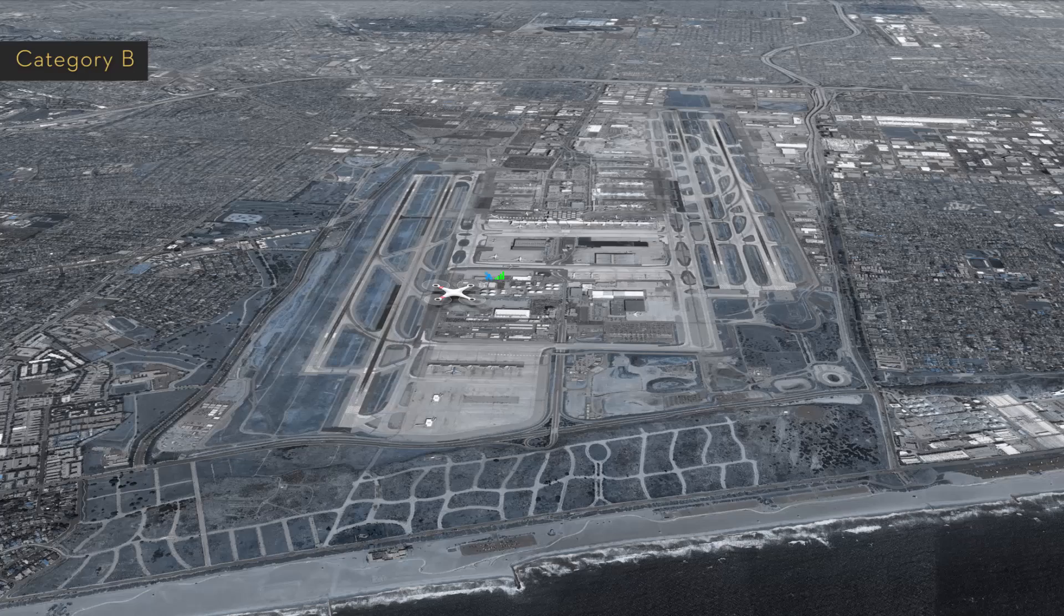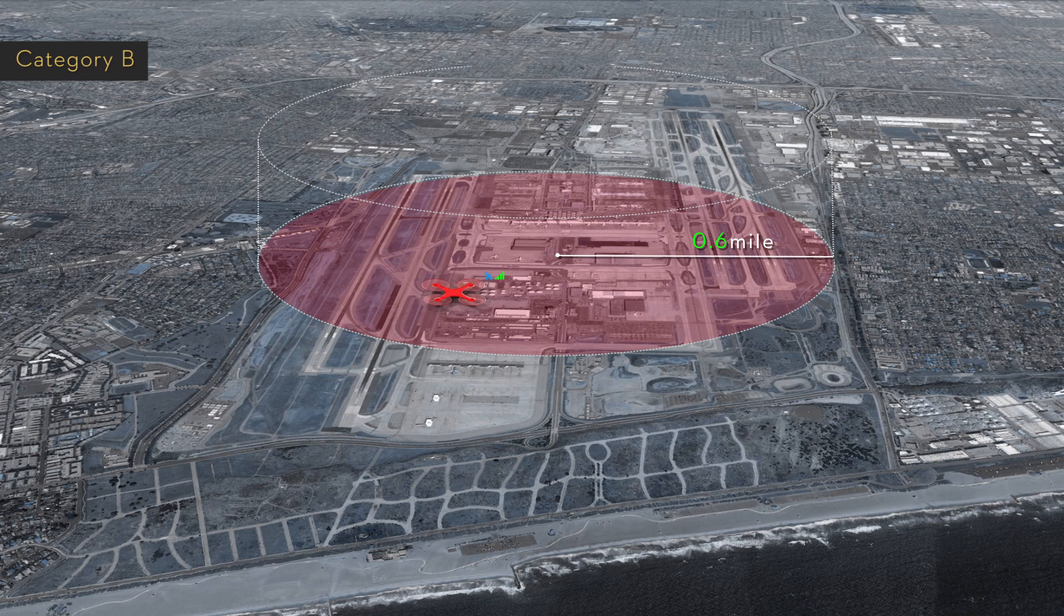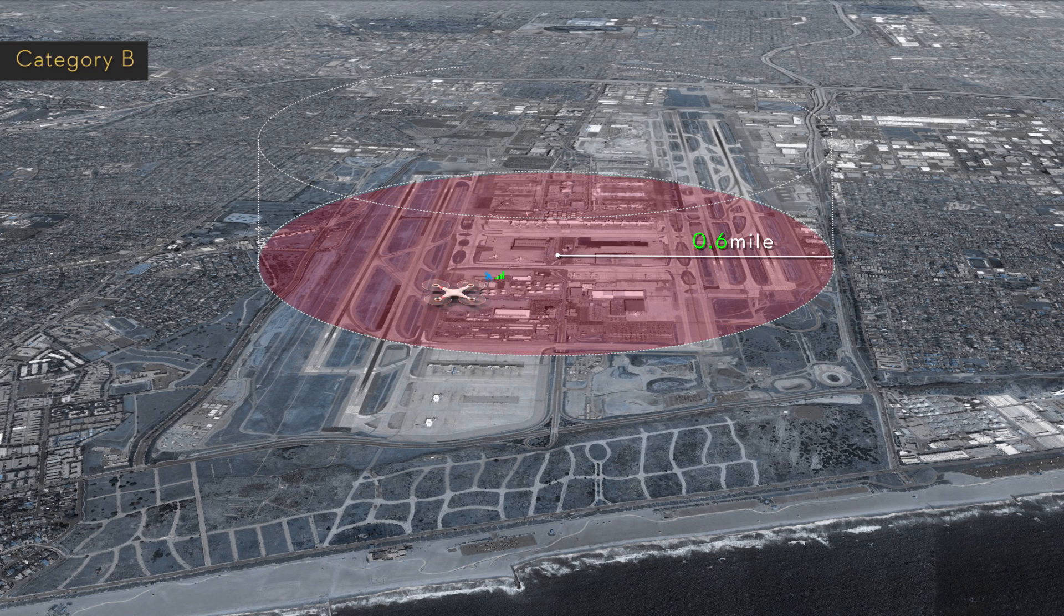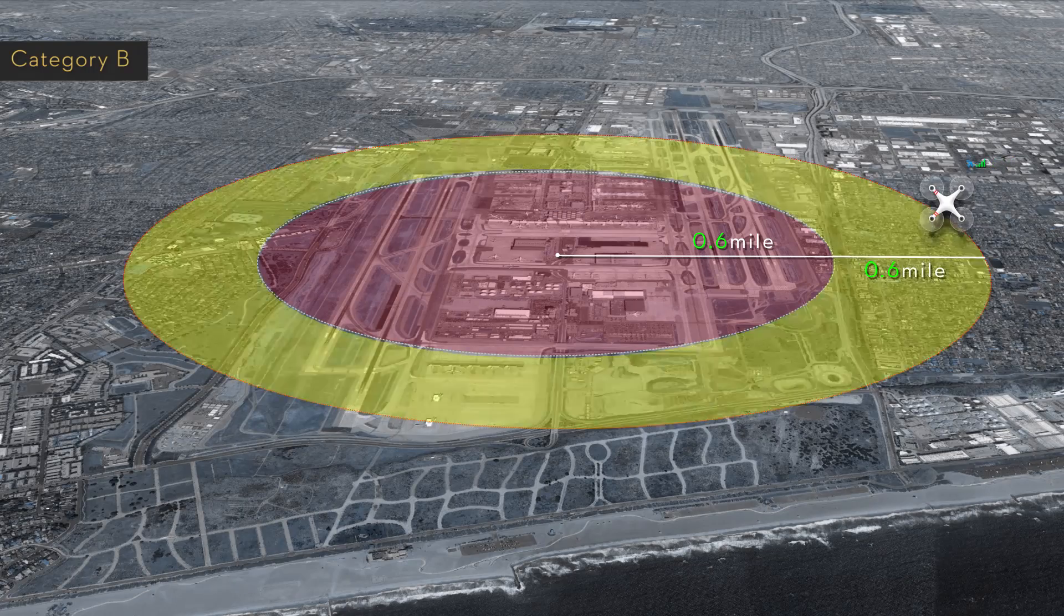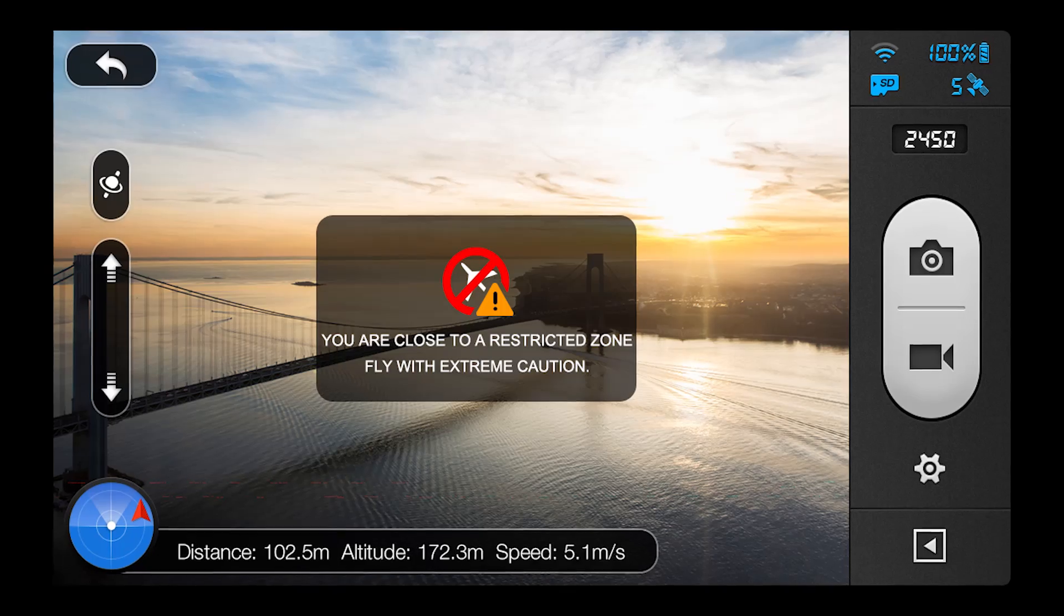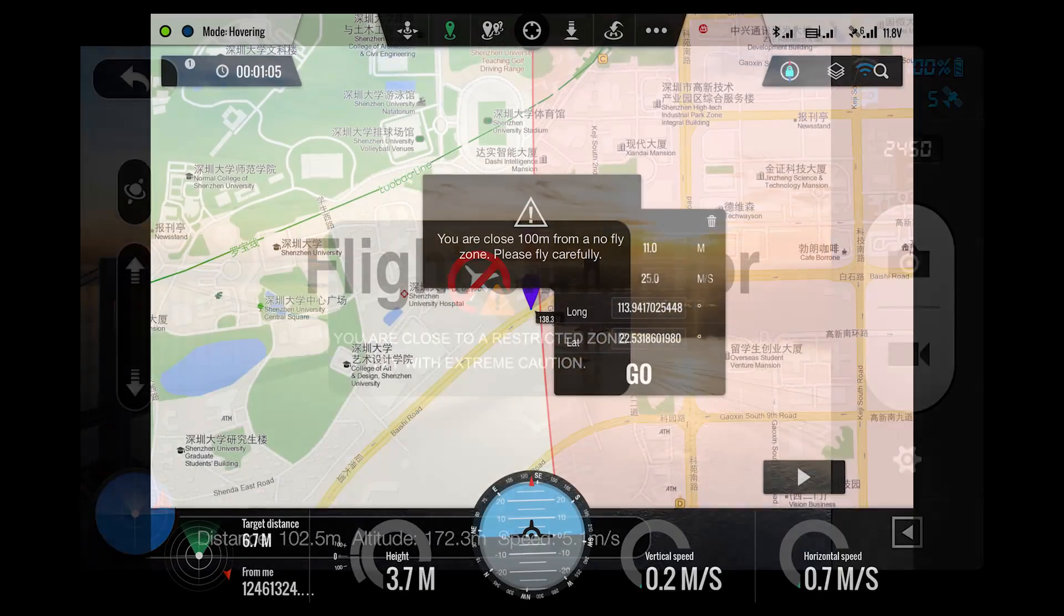For Category B, which are much smaller airports, if you are less than 0.6 miles or 1 kilometer away from a restricted area, you will be unable to take off. Again, with the Vision or Ground Station app, you will be warned in advance if you are within 0.6 miles of entering a Category B safety zone.